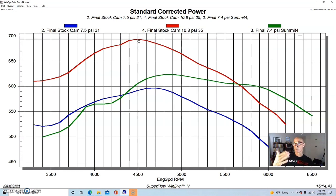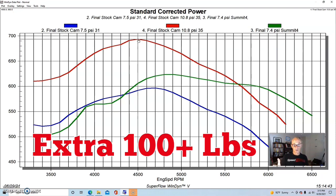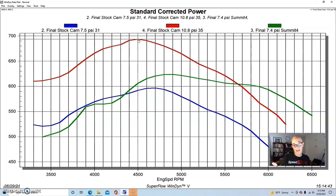But that doesn't tell the whole story. Take a look at all of this area below 5500 RPM and look how much more power the more boost is making with the stock cam than the cammed version at a lower boost level. And this is most evident if I would show you the torque curves, because you can really see what's happening here.